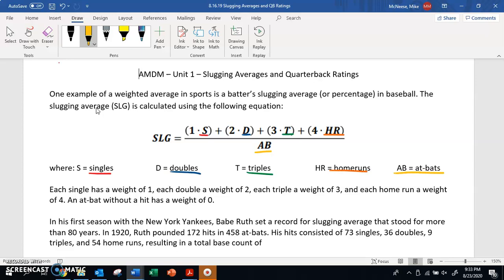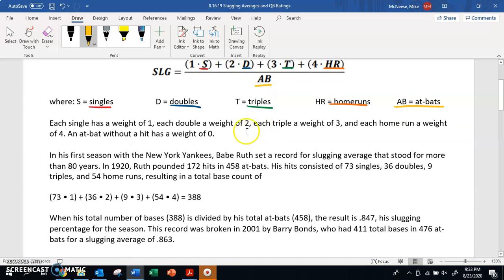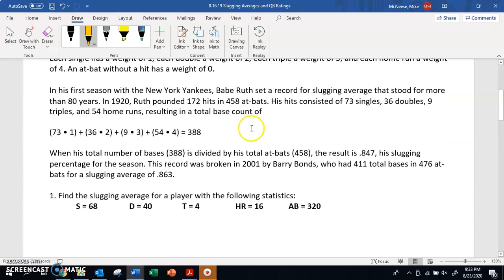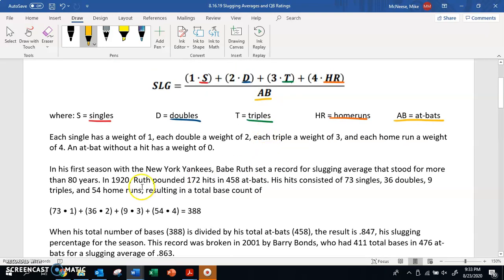Anytime they give us info, I want to identify all of these parts and then simply plug them into this formula. In his first season with the Yankees, Babe Ruth set a record for slugging average that stood for more than 80 years. In 1920, Ruth pounded 172 hits in 458 at-bats. His hits consisted of 73 singles, 36 doubles, 9 triples, and 54 home runs.